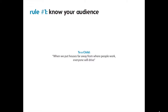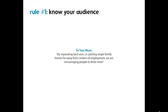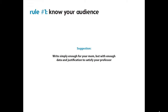For example, explaining to a child: 'When we put houses far away from where people work, everyone will drive.' For your mom, you can be a bit more complicated: 'By separating land uses — putting single-family homes far away from centers of employment — we are encouraging people to drive more.' And for a professor or academic colleague: 'There is a statistically significant and positive relationship between communities that mandate single-use zoning and total vehicle miles traveled.' All three communicate the same point with different layers of nuance. As a suggestion, write simply enough for your mom, but with enough data and justification to satisfy your professor.